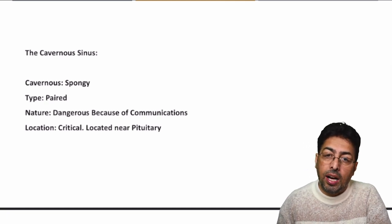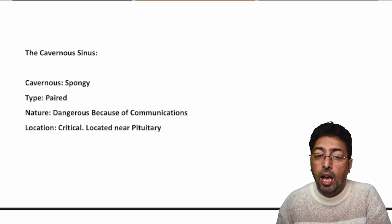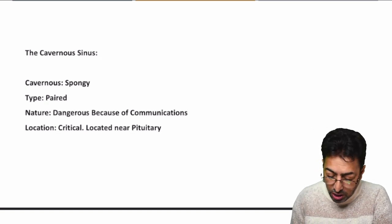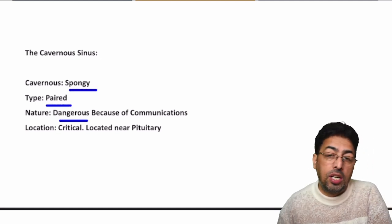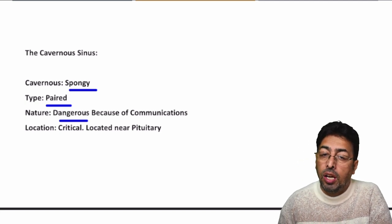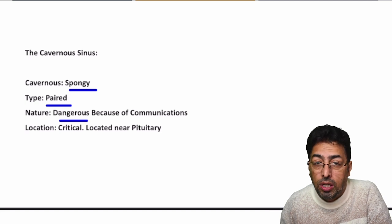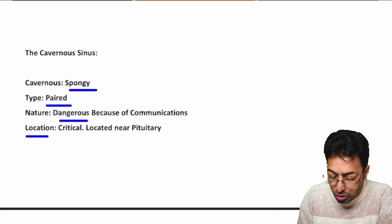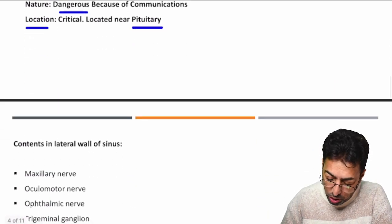To arrive at this diagnosis, you first need to know what the cavernous sinus is. Briefly, in terms of surgical anatomy: the cavernous sinus is a spongy, paired venous sinus. It is considered dangerous because of its multiple communications with many veins, and its intricate location adjacent to the pituitary fossa.